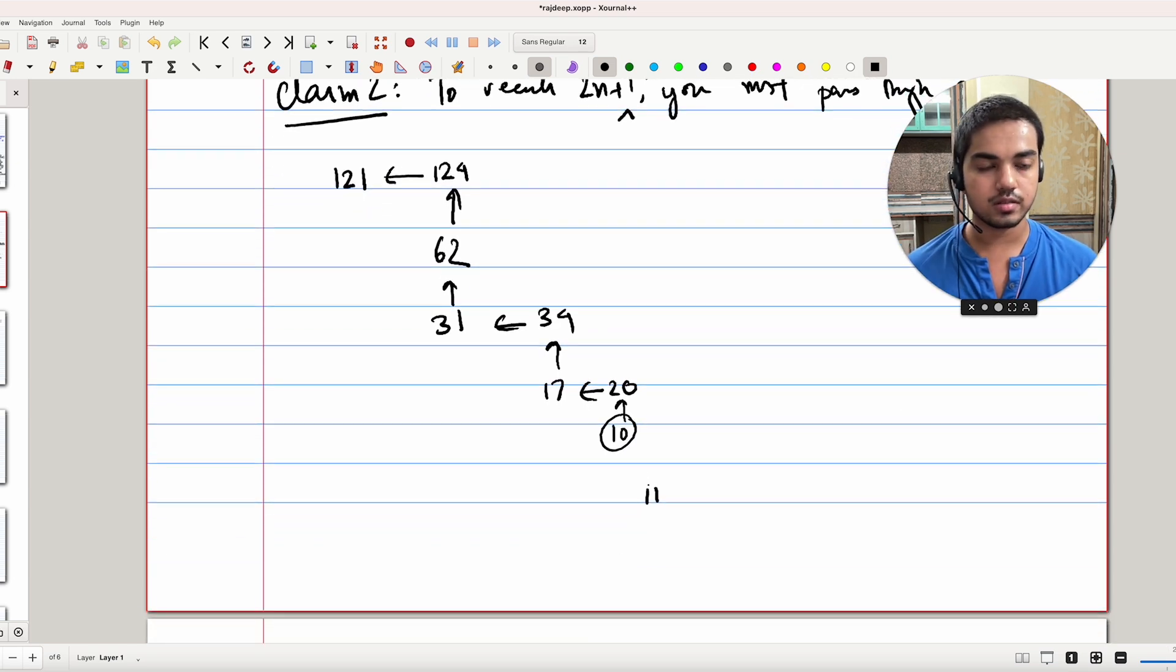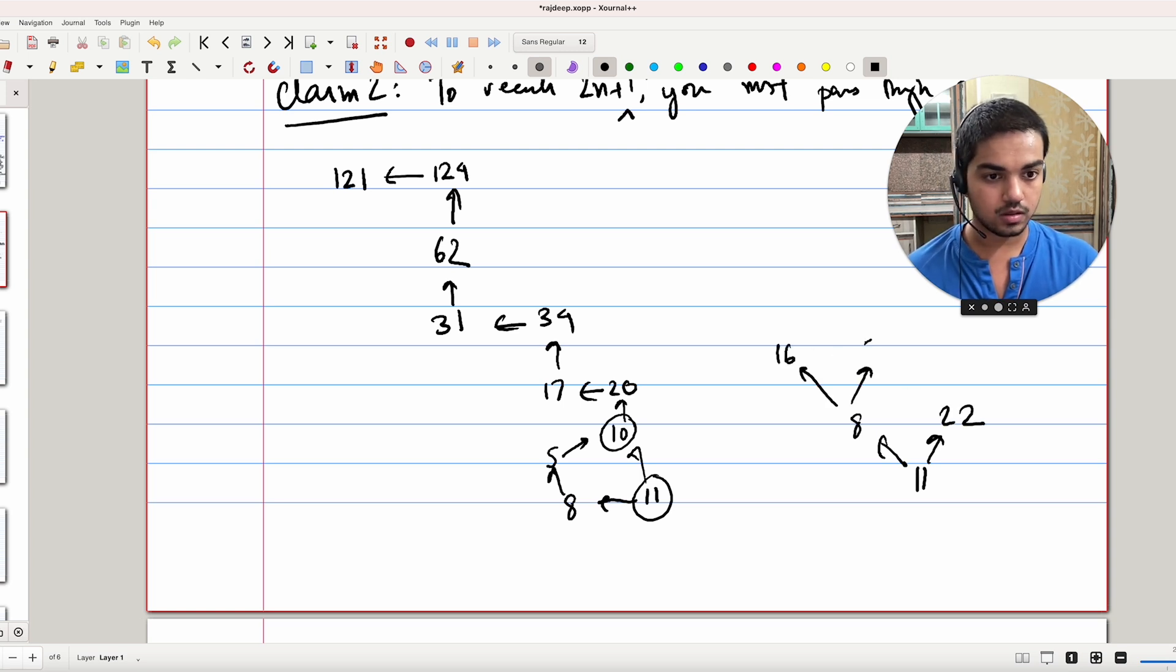One clear strategy is to go from 11 to 8 by subtracting 3, then subtracting 3 again to reach 5, and then double. This is a three-step process. It's a very easy brute force calculation to see that you can't go from 11 to 10 in two steps. We can simply start at 11, make a possibility tree: I either subtract 3 or I double. From 8, you can either go to 16 or 5. From 22, you can either go to 19 or 44, and nowhere is 10 here. So you cannot reach 10 in two steps, and you can clearly reach 10 in three steps.